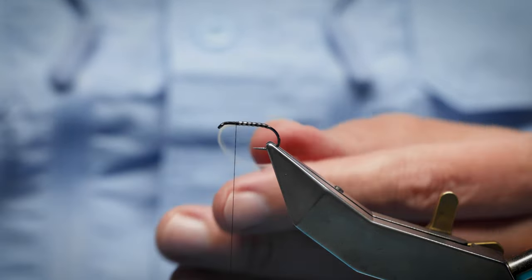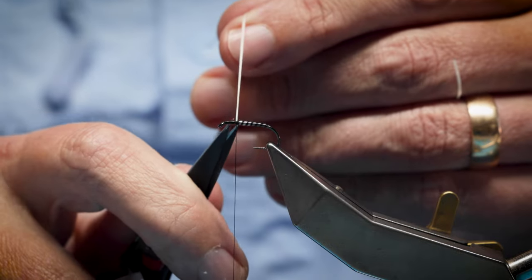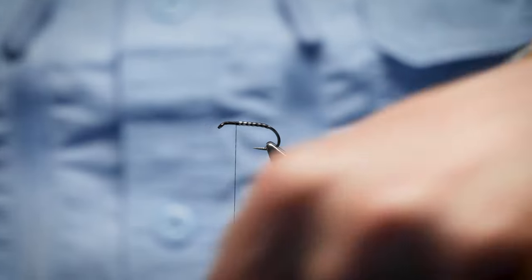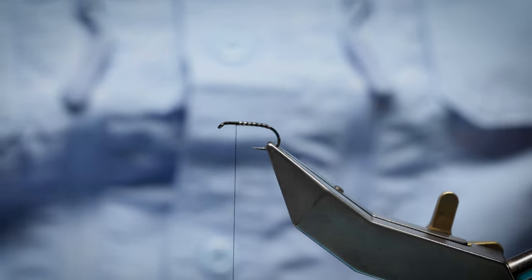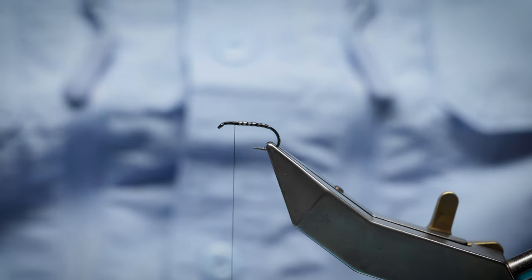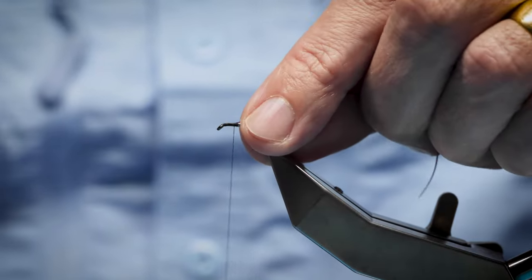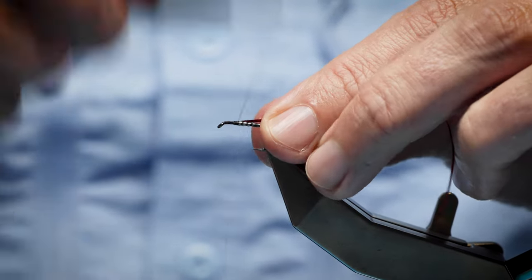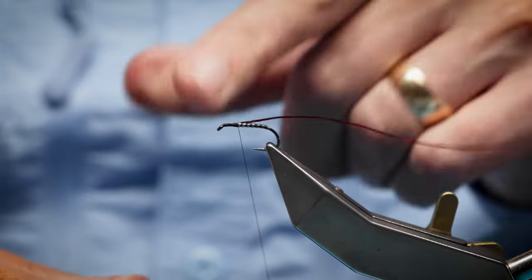Now there's three turns or so there – just that's the area you're going to be tying the holographic tinsel on, so I'm just going to basically level that out. I'm using a red holographic tinsel – a small or a medium – just catch it, basically come back down to where you caught in your white Flexi Floss and then come back up again.